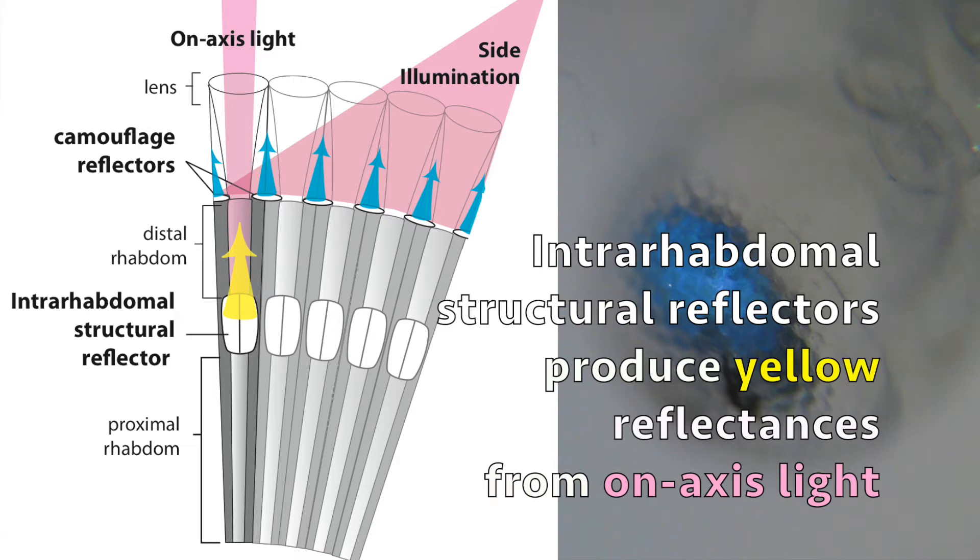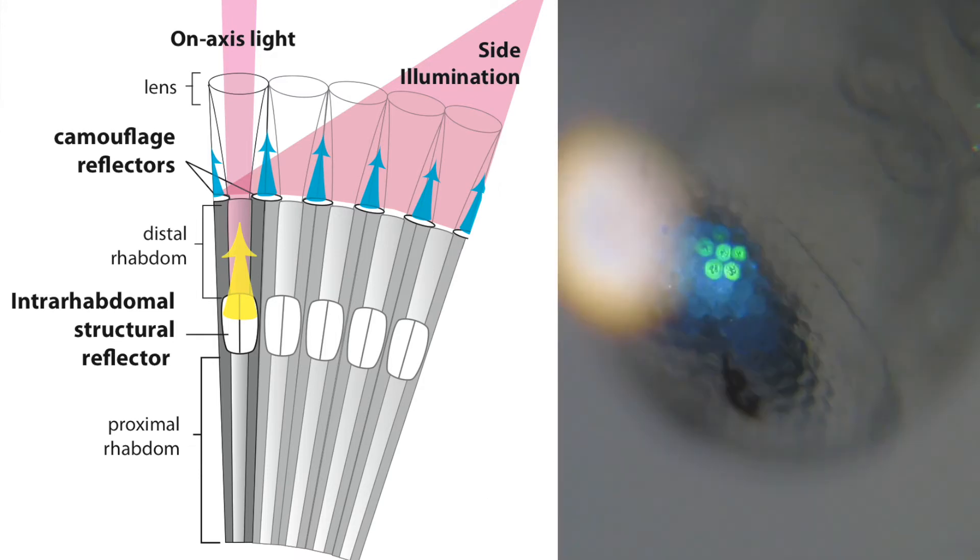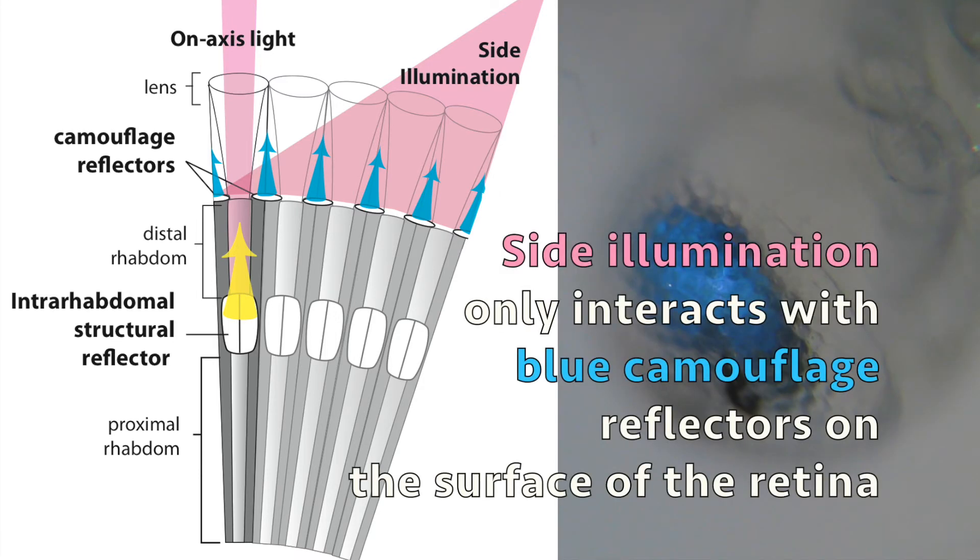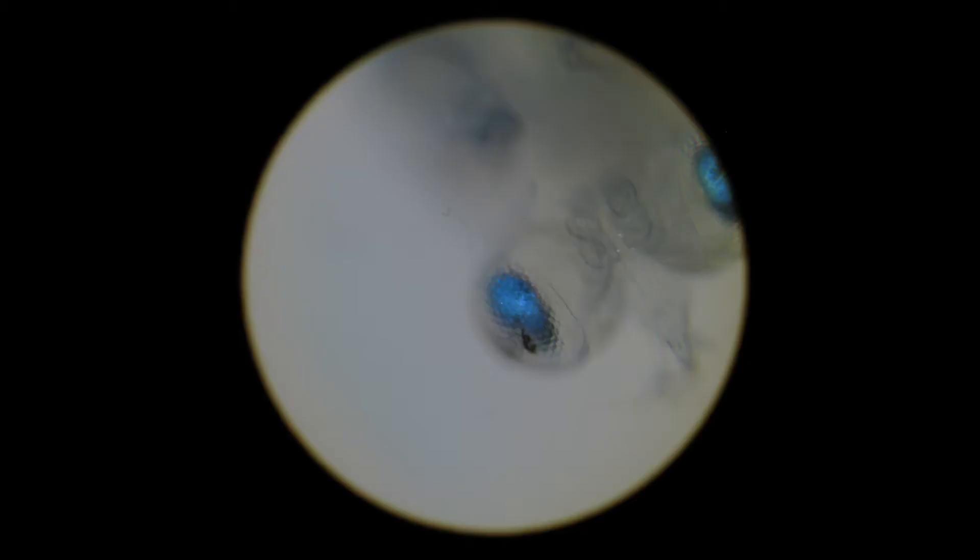Inter-rhabdomal structural reflectors produce yellow reflectances from on-axis light coming down the eye unit. Side illumination of an eye only interacts with blue camouflage reflectors on the surface of the retina, independent of the ISR.